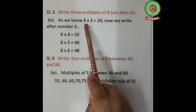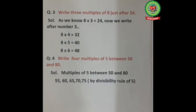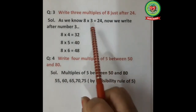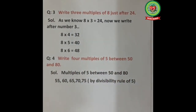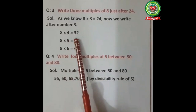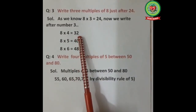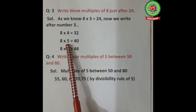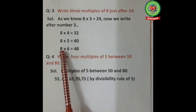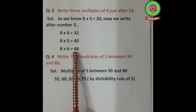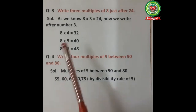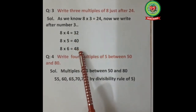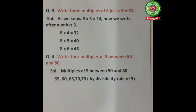Type 3: write 3 multiples of 8 just after 24. Since 8×3=24, we write numbers after position 3: 8×4=32, 8×5=40, 8×6=48. So the 3 multiples of 8 after 24 are 32, 40, and 48.